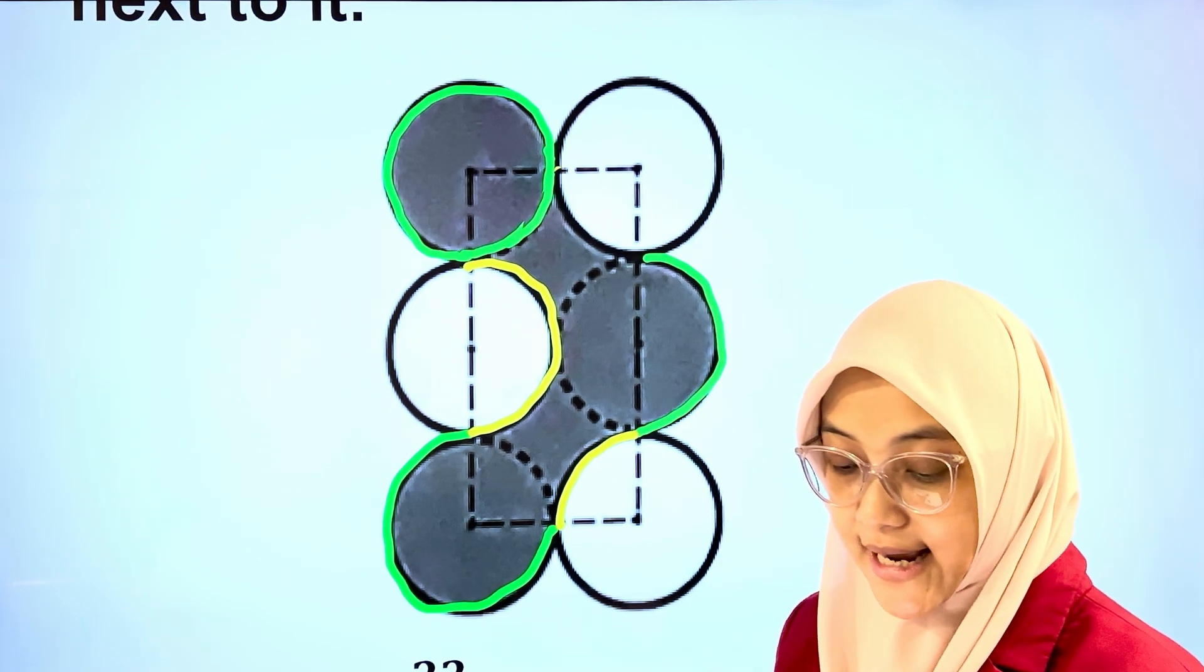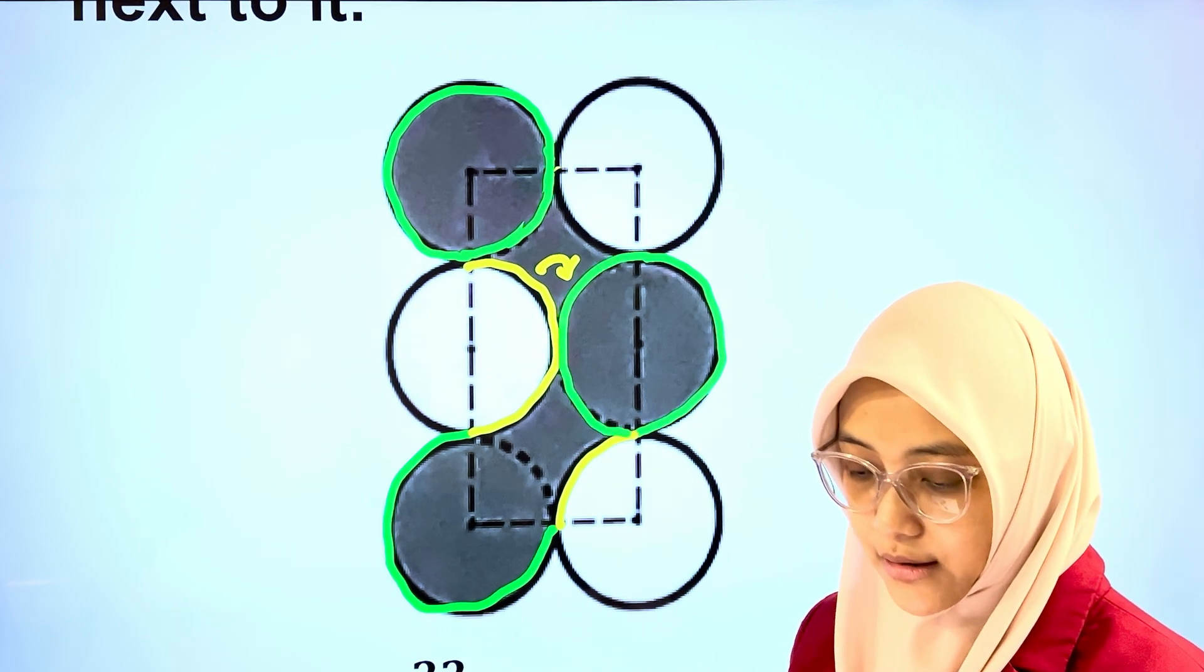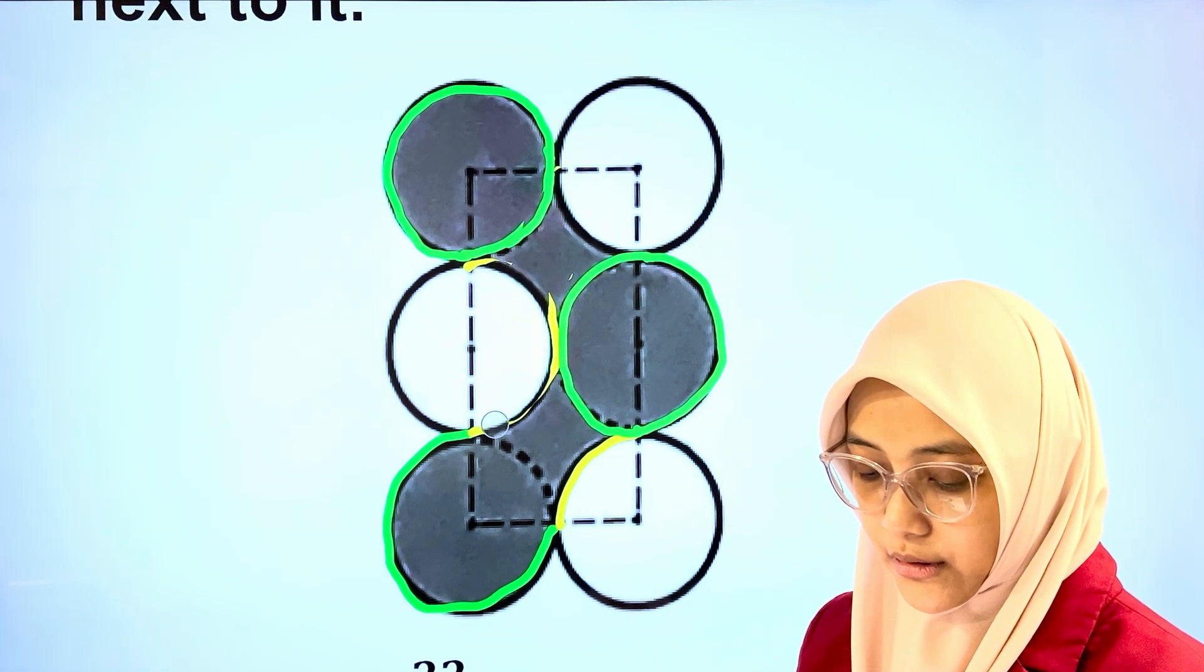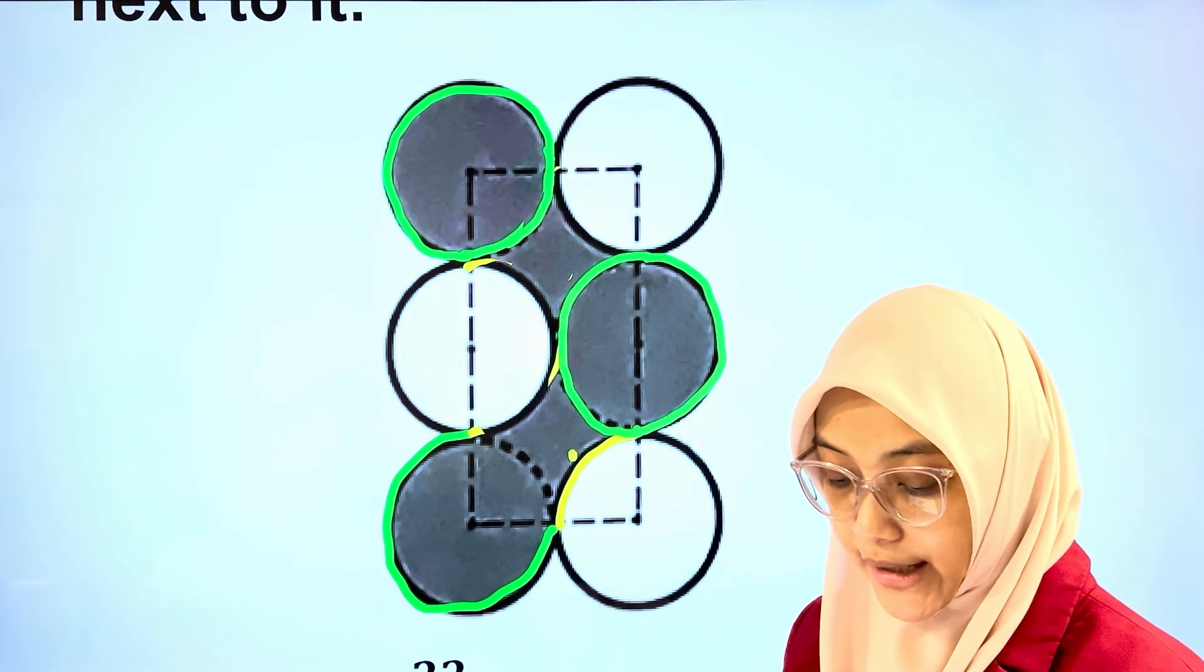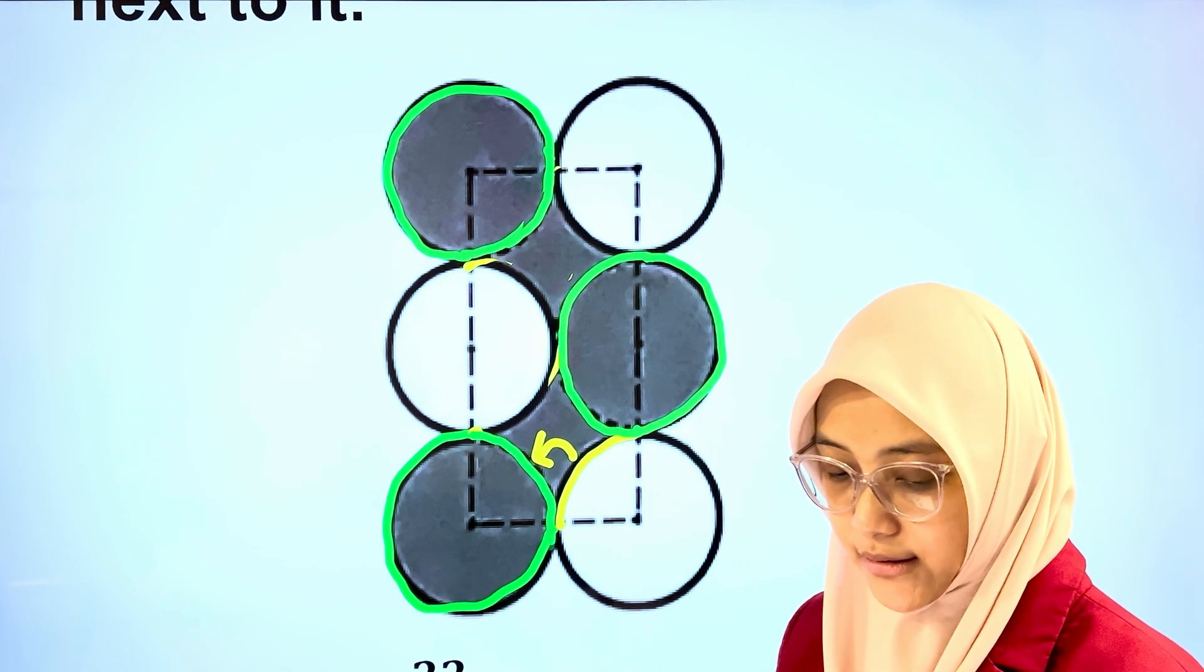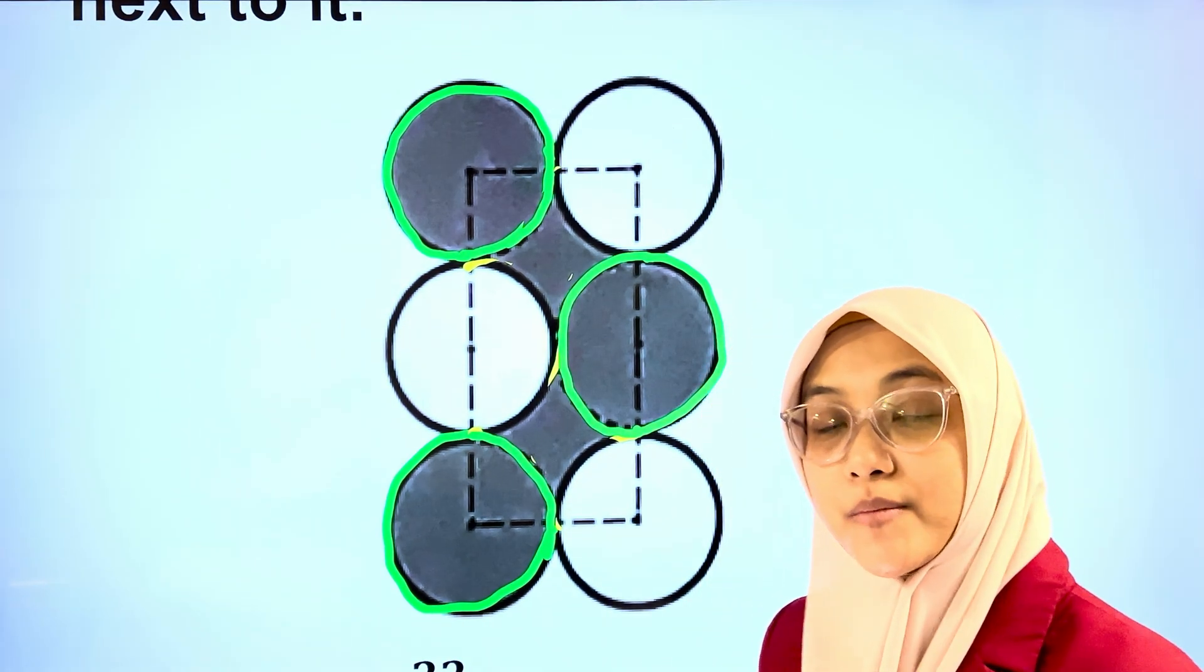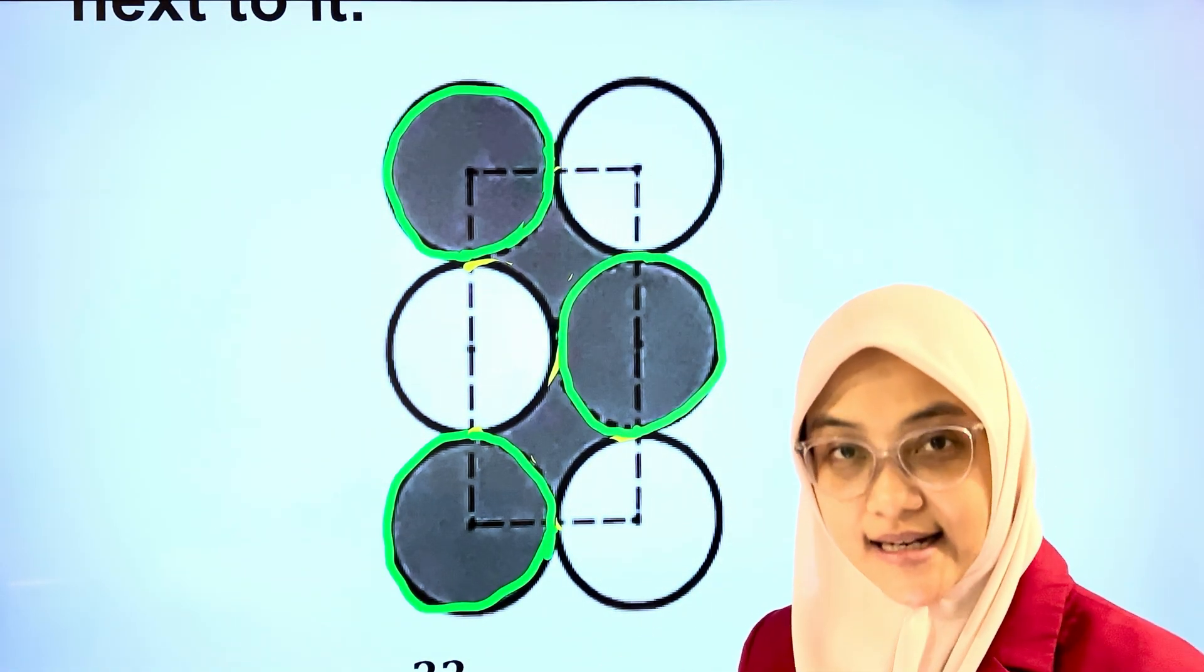Same goes with the next yellow line. Move it here. And we can form another full circle. Don't look at this anymore. And lastly, move the last yellow line here. And I can form another full circle. Erase away this. What does it mean? That means the perimeter of the shaded part is the circumference of 3 full circles.